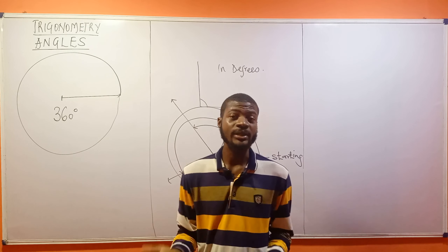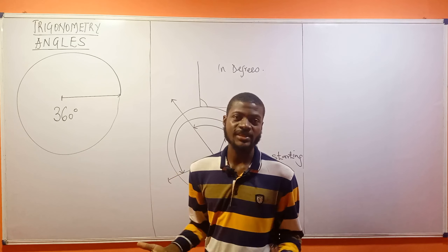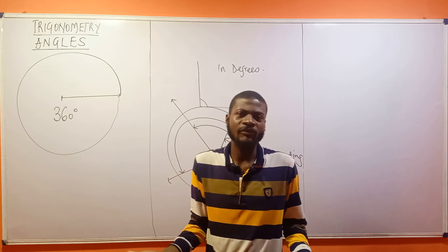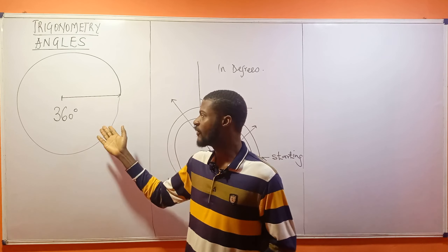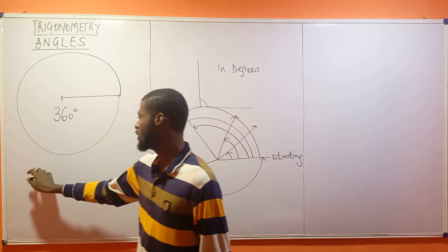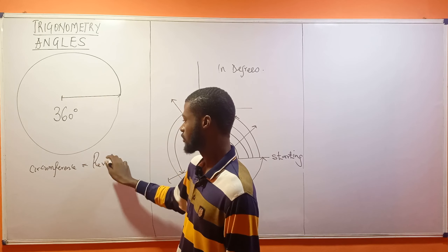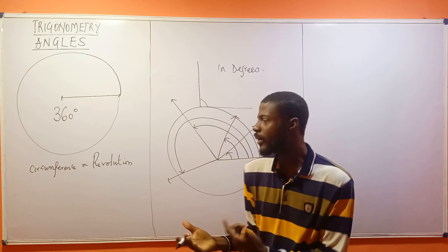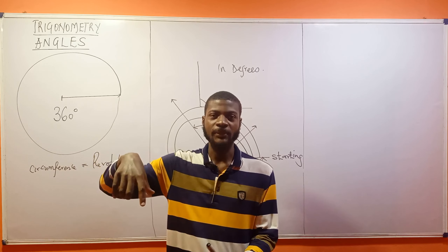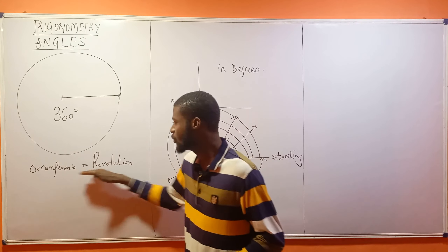This single revolution is 360 degrees in terms of angles. So normally they will tell you the angle in a circle is 360 degrees. This complete revolution is 360 degrees. This same movement can be the circumference of the circle — it's possible. So is there a relationship between the circumference and revolution? Yes, there is, because these two things are actually the same. When you move round a particular shape, you have moved round the circumference or perimeter of that shape.